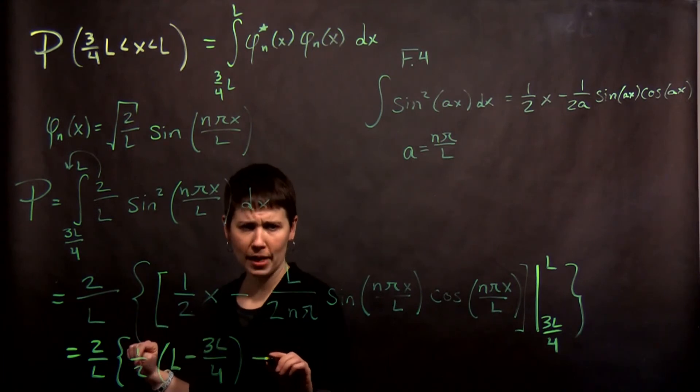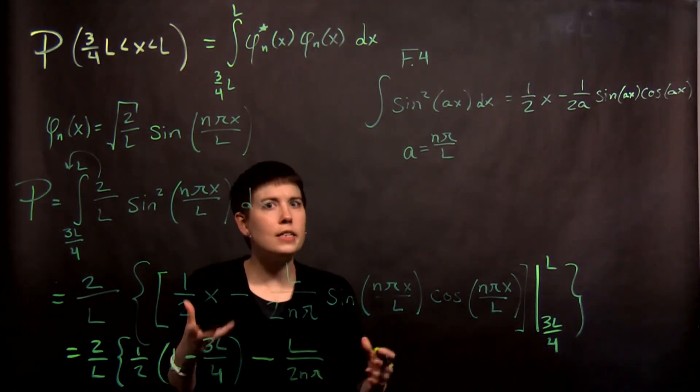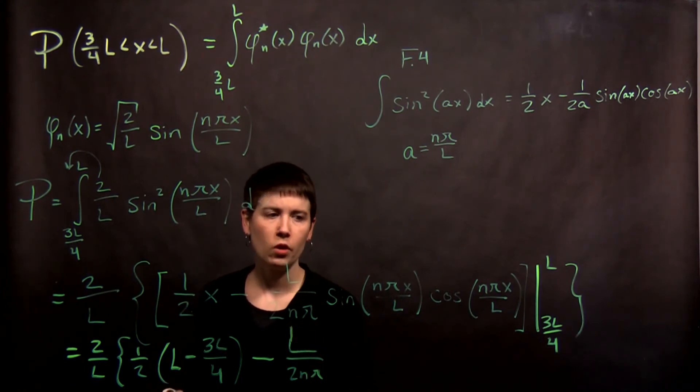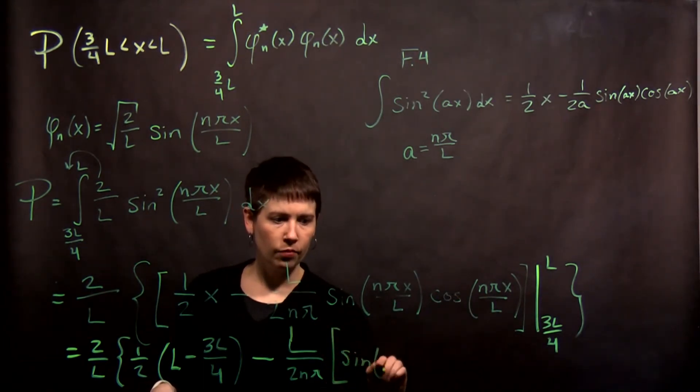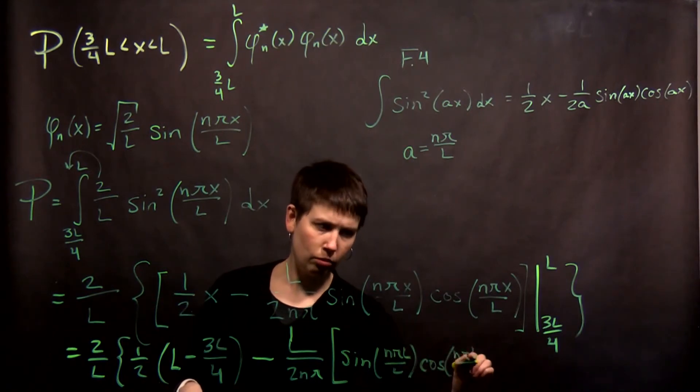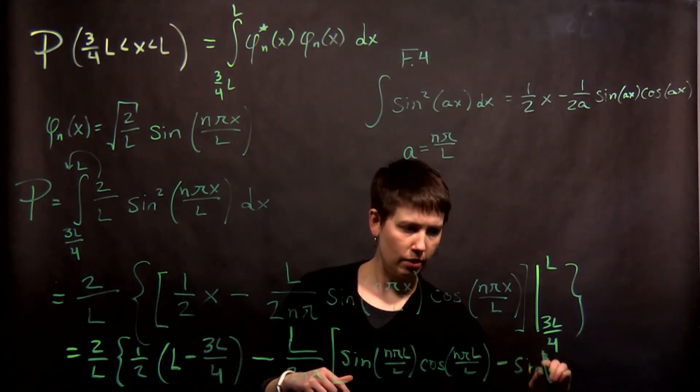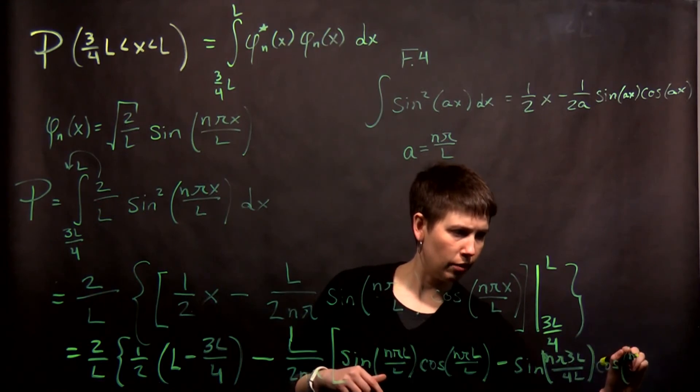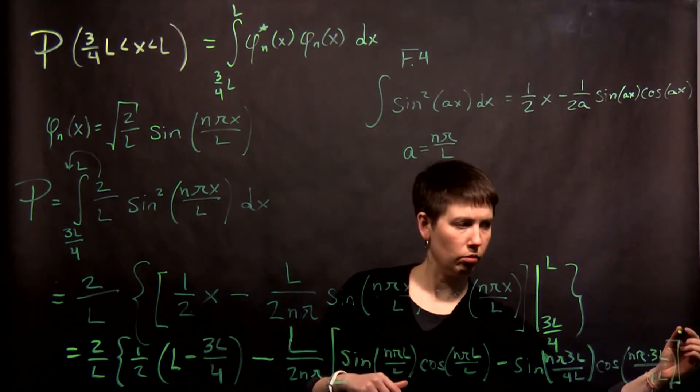Now I then have minus l over 2n pi. Notice that it seems like this probability is going to depend on n. I didn't actually say anything about which state it is in originally, so it does seem like that matters. That is in fact it is going to be 1 quarter l. And now what I need to do, I'll nest some brackets. We have sine of n pi l over l, cosine of n pi l over l, minus sine of n pi 3l over 4l, and then cosine of n pi 3l over 4l. Close bracket, close bracket.